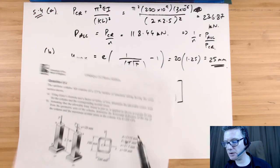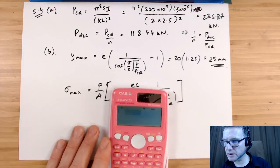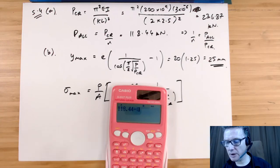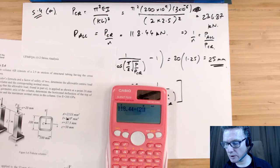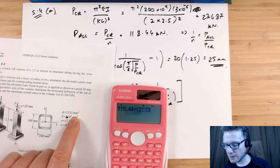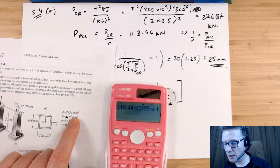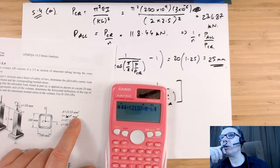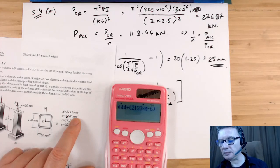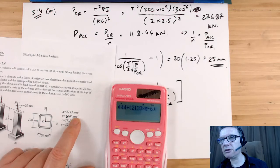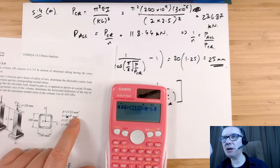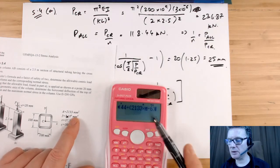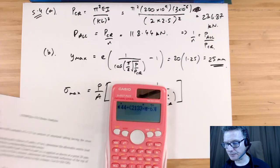The P is my allowable force, 118.44 kilonewtons. Divide it by the area which is 2333 millimeters squared. So that will be in meters squared, 10 to the minus 6. Don't forget, to change from one meter to millimeters, you times it by a thousand. And if you're doing that in terms of areas, make sure you do a thousand times a thousand again, so 10 to the 6. In this case we're going in the opposite direction, so 10 to the minus 6.